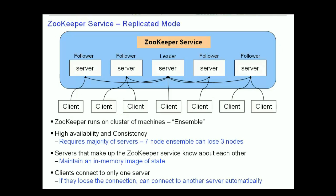In a distributed ZooKeeper implementation, there are multiple servers — this is known as ZooKeeper's replicated mode. One server is elected as the leader, and all additional servers are followers. If the ZooKeeper leader fails, then a new leader is elected. All ZooKeeper servers must know about each other, and each server maintains an in-memory image of the overall state as well as transaction logs and snapshots in persistent storage. Clients connect to just a single server; however, when a client has started, it can provide a list of servers. If the connection to its server fails, the client connects to the next server in its list. Since each server maintains the same information, the client is able to continue to function without interruption.